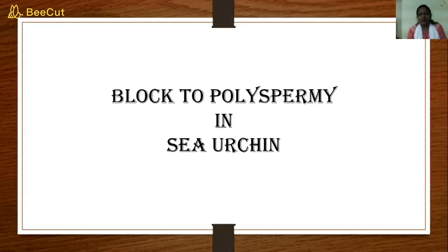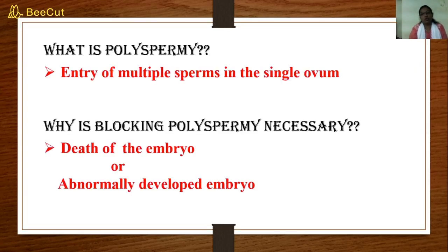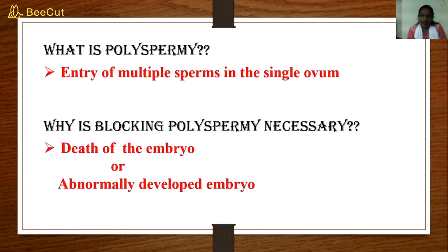Welcome everyone. Today I'll be talking about block to polyspermy in sea urchin. First, let's see what polyspermy is. In a normal scenario, a single ovum will be fertilized by a single sperm, but there are conditions under which two or more sperms enter a single ovum. This entry of multiple sperms inside a single ovum is referred to as polyspermy.